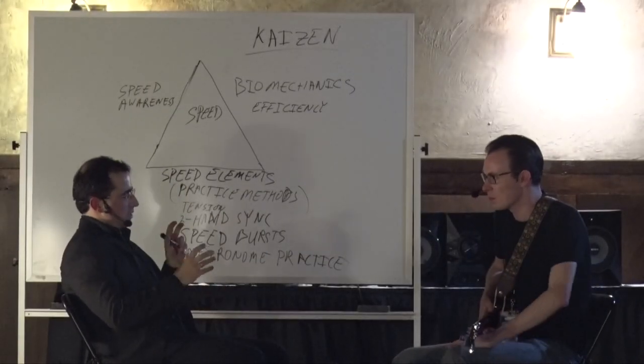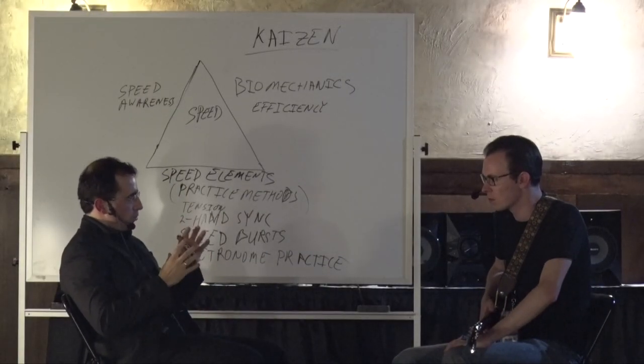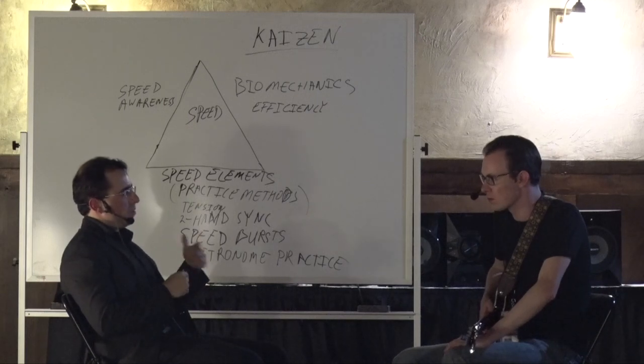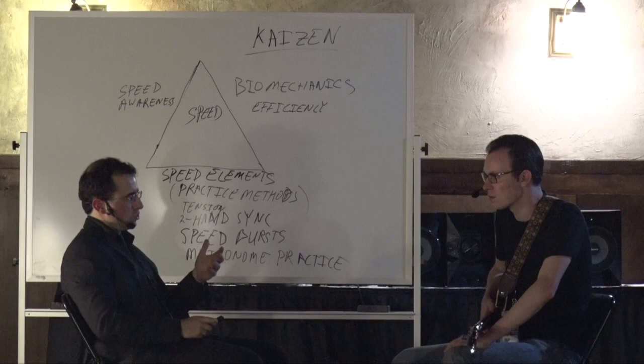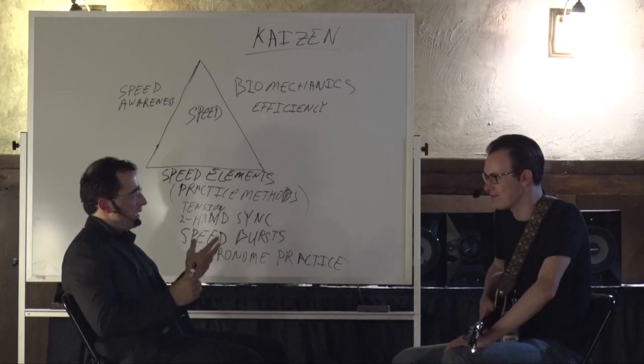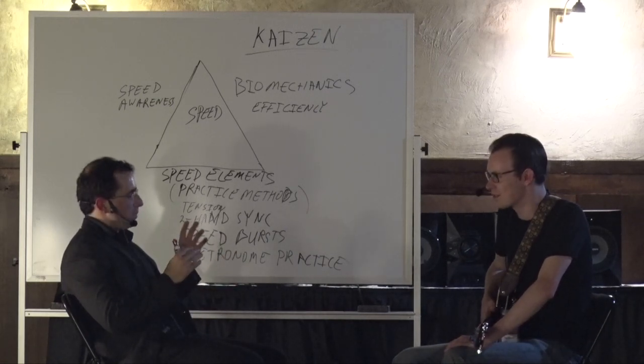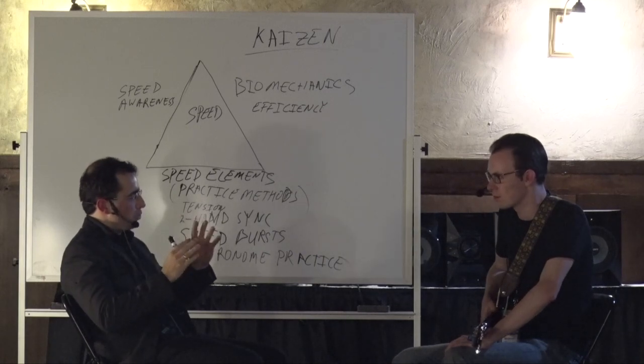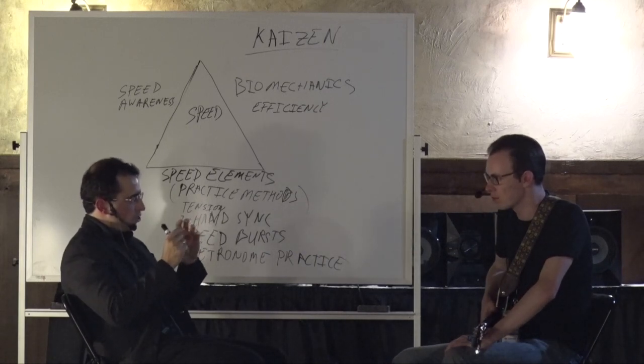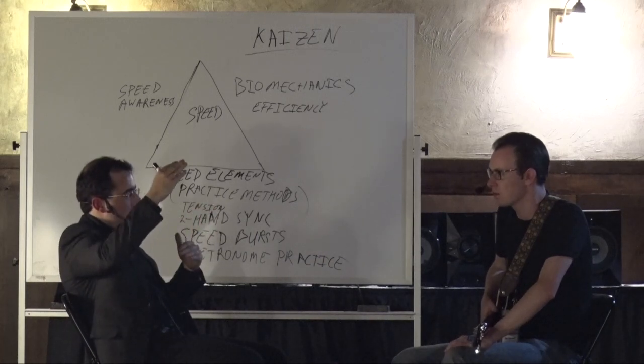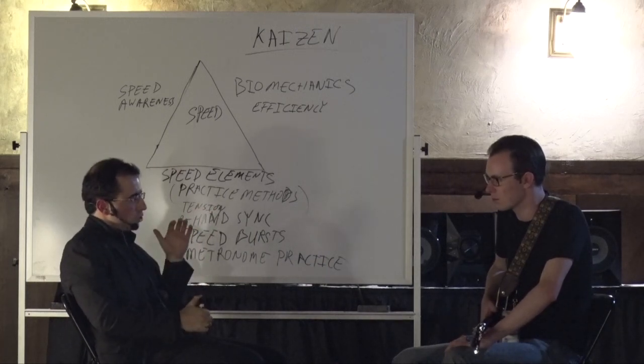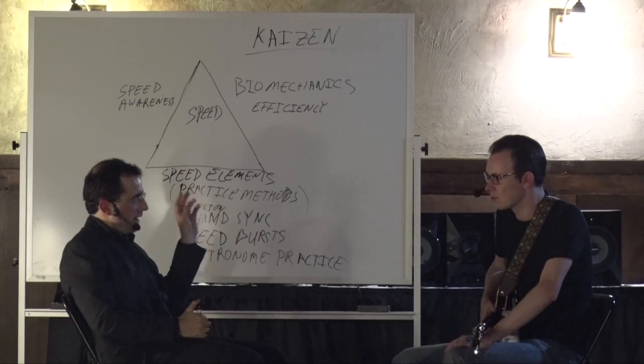And it means basically small gradual improvements. In Japanese corporations, they have these things called kaizen blitzes, which is kind of weird because blitz is a German word. Anyway, so it basically means they have intense periods of focus on just improving efficiency in the things that they do. Just little, small, tiny improvements that over time add up to a lot. So, that's the mindset I want you to have, the kaizen mindset.